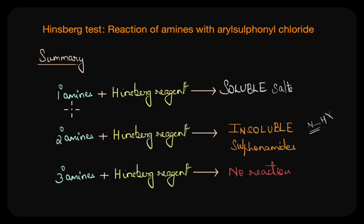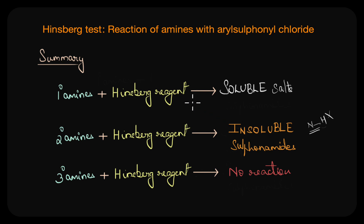The Hinzberg test provides a quick and reliable method to identify the type of amine in a particular sample. However, the reaction has certain limitations: highly bulky amines may react very slowly or not at all, and sometimes the sulfonamides formed may not show clear distinct solubility differences. In the next video, we'll solve a couple of questions on differentiating amines using all these reactions — the Hinzberg reaction, reaction of amines with nitrous acid, and the carbylamine reaction.